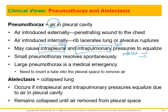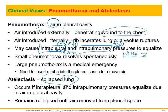If air is introduced into the pleural cavity, this intrapleural pressure goes up. If the intrapleural pressure becomes higher than the intrapulmonary pressure, you can have a collapsed lung — pneumothorax. This can be from an external wound to the chest where atmospheric air rushes in, or from trauma like a car accident where a rib lacerates the lung internally, or from an alveolus rupturing. To reinflate the lung, you have to insert a tube into the pleural cavity and remove that air to return pressures back to normal.